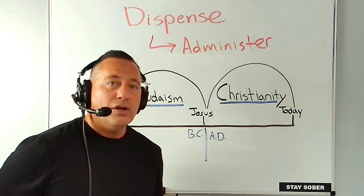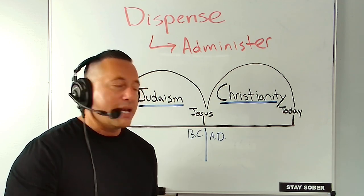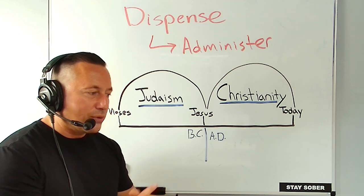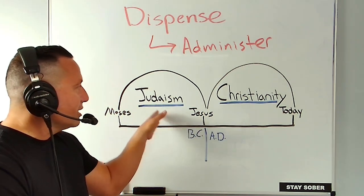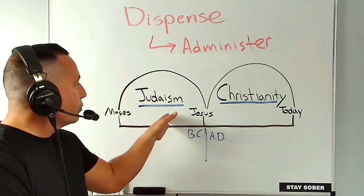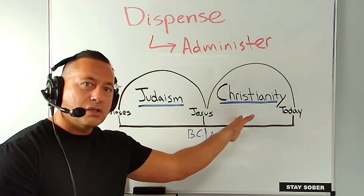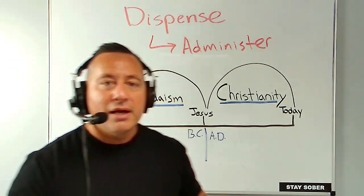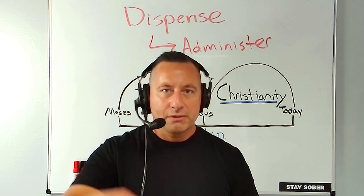I will make another video called What is Hyperdispensationism? But for now, can we agree that on this side of the cross it functioned like this, and on this side of the cross it functioned like this? On this side of the cross was one administration; on this side of the cross was another administration — or dispensation. Ladies and gentlemen, that is what dispensationalism is. Thank you very much. Peace out.